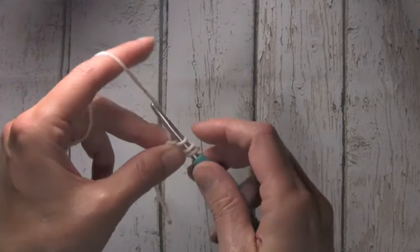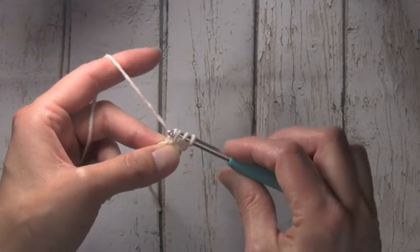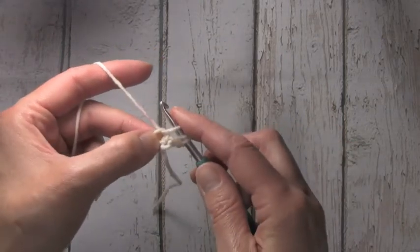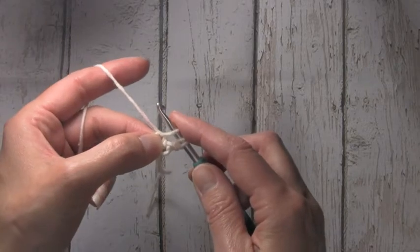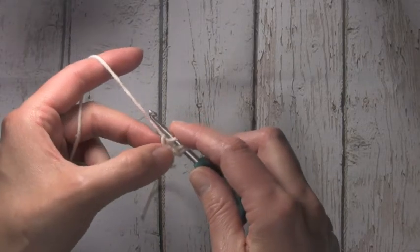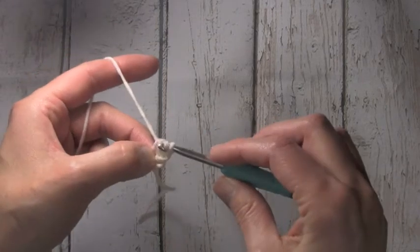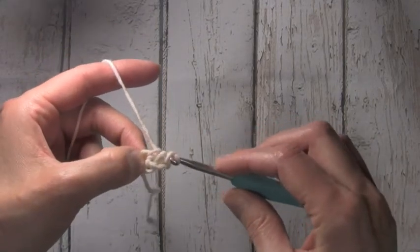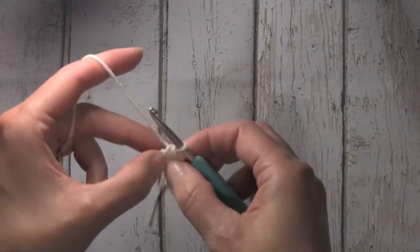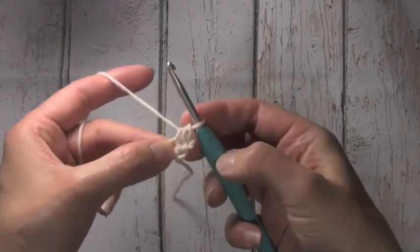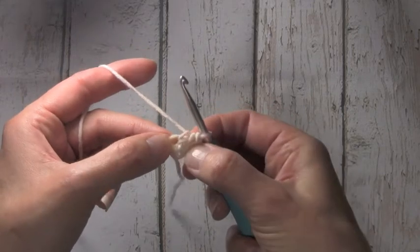We will keep track of that, but then we will yarn over, pull up another loop, grab that loop because that is what we're going to work our next half double crochet into. Yarn over and just as you would half double, pull through all three loops on your hook. As you can see here I've made my first complete half double crochet.